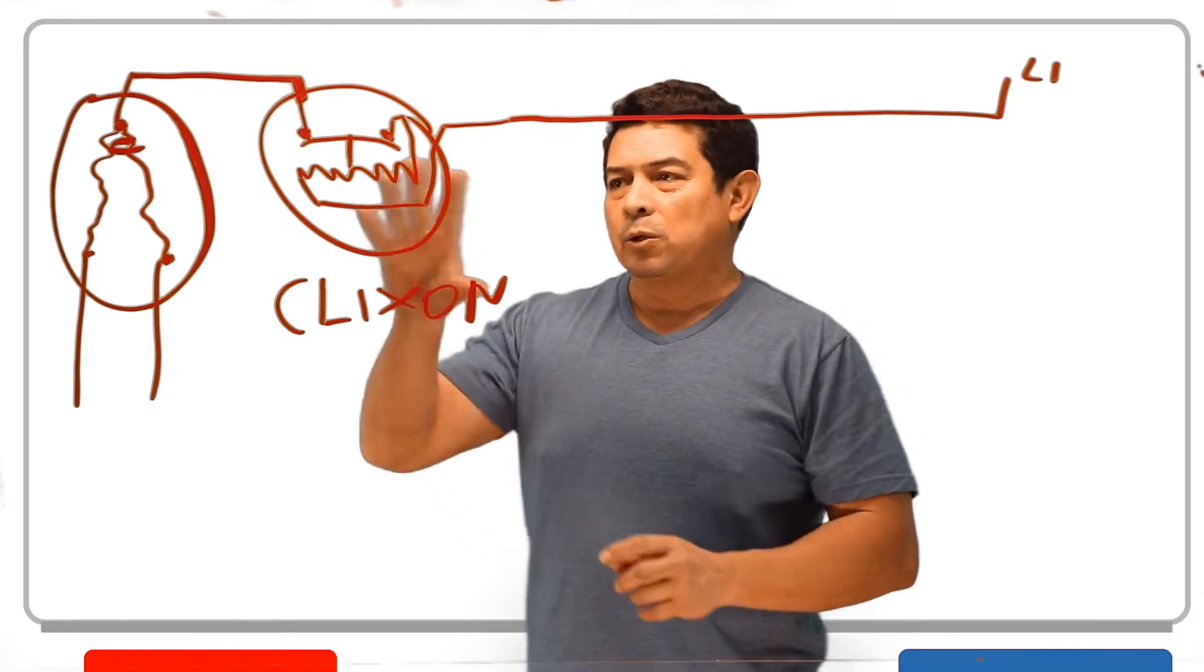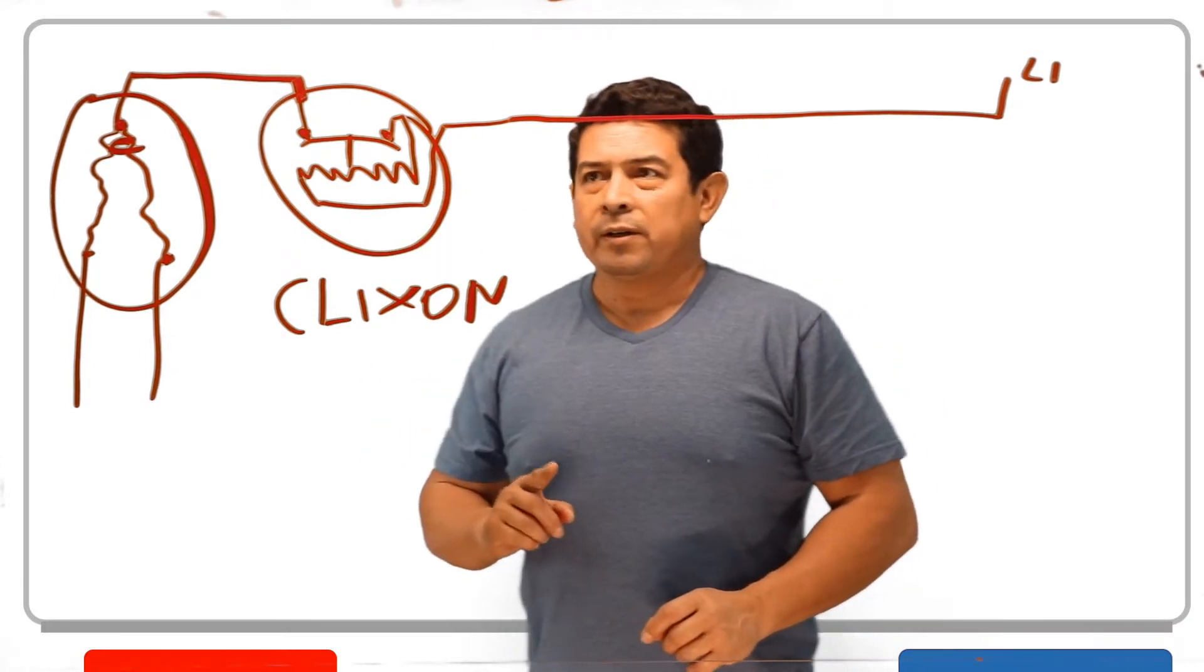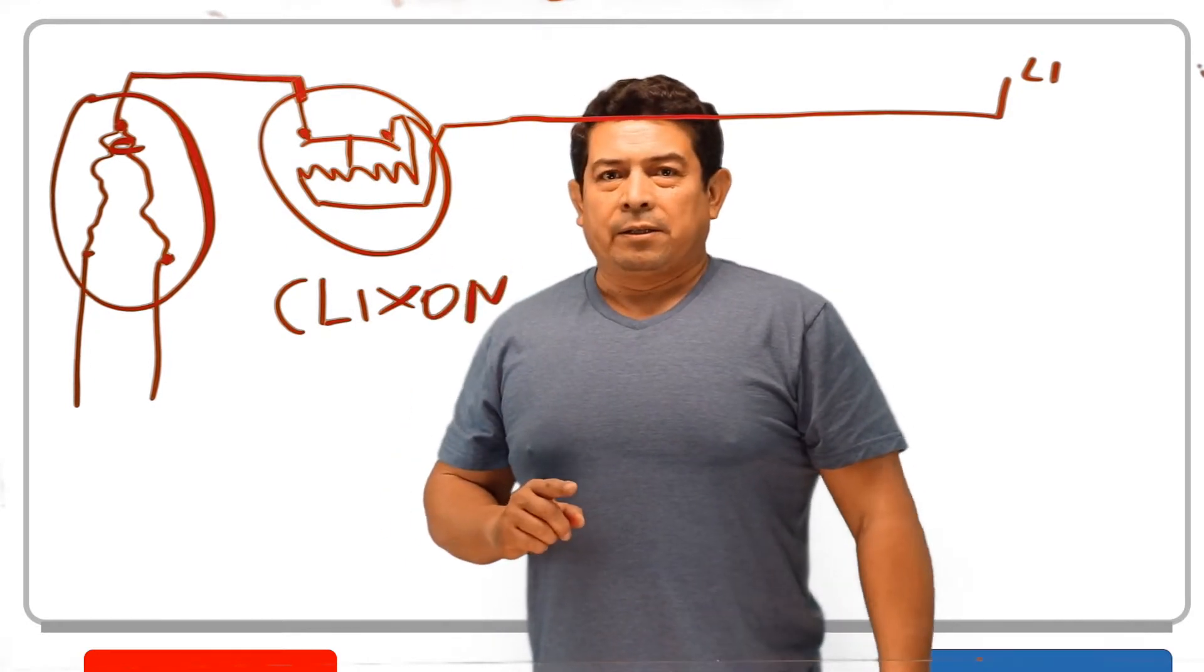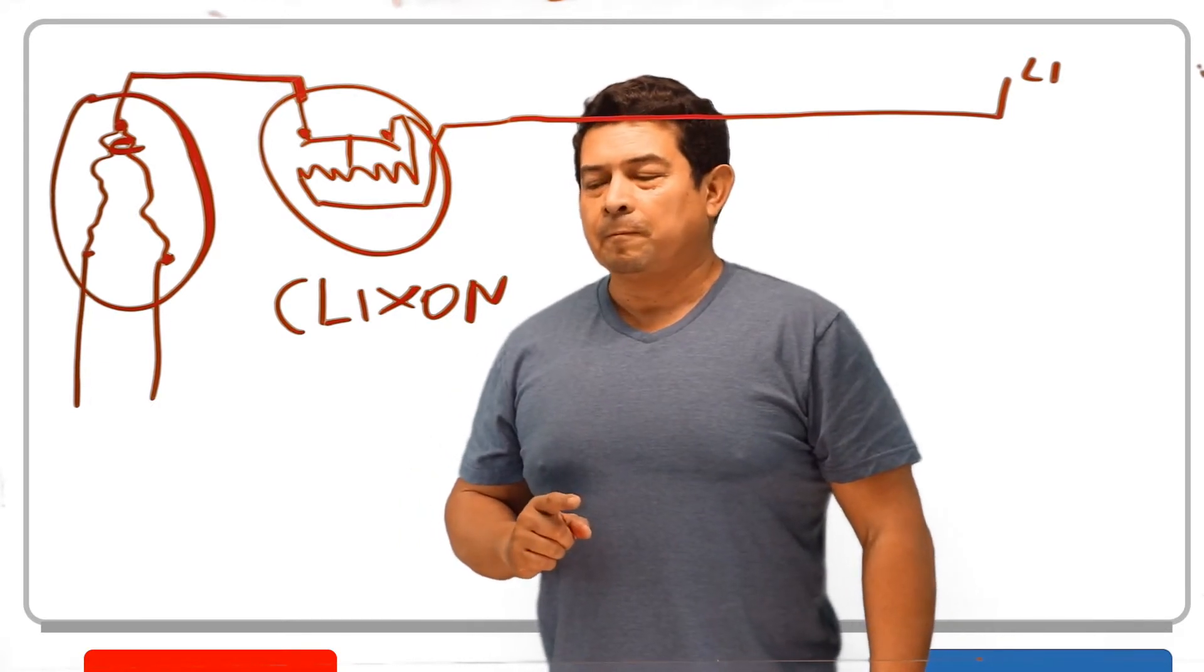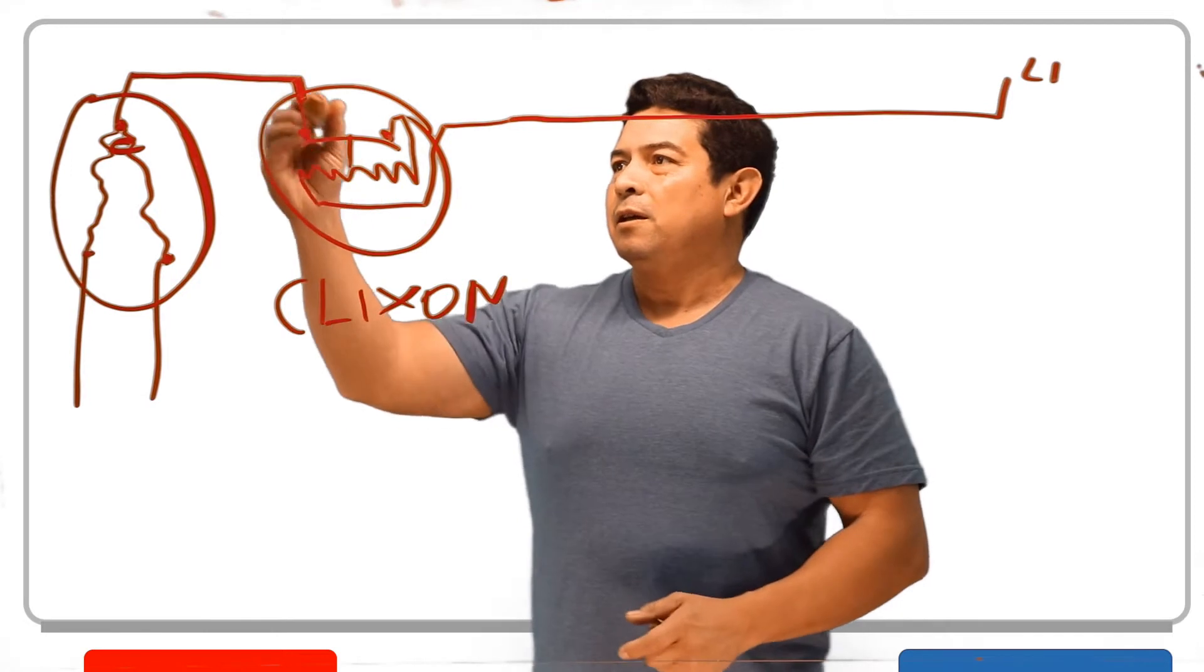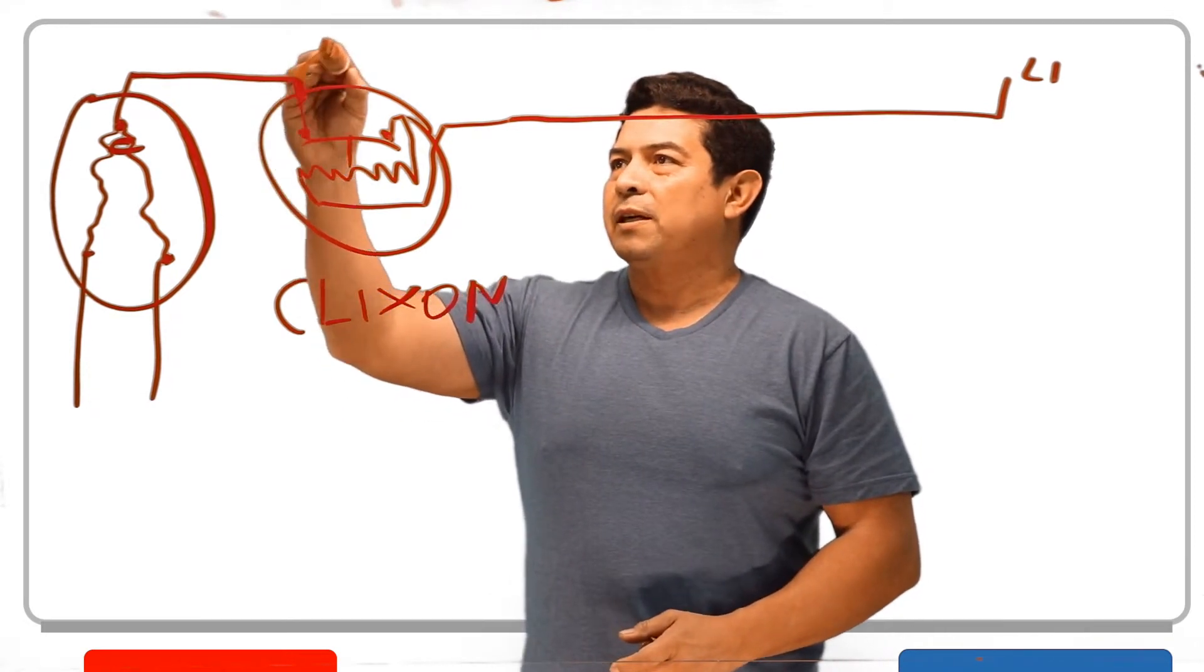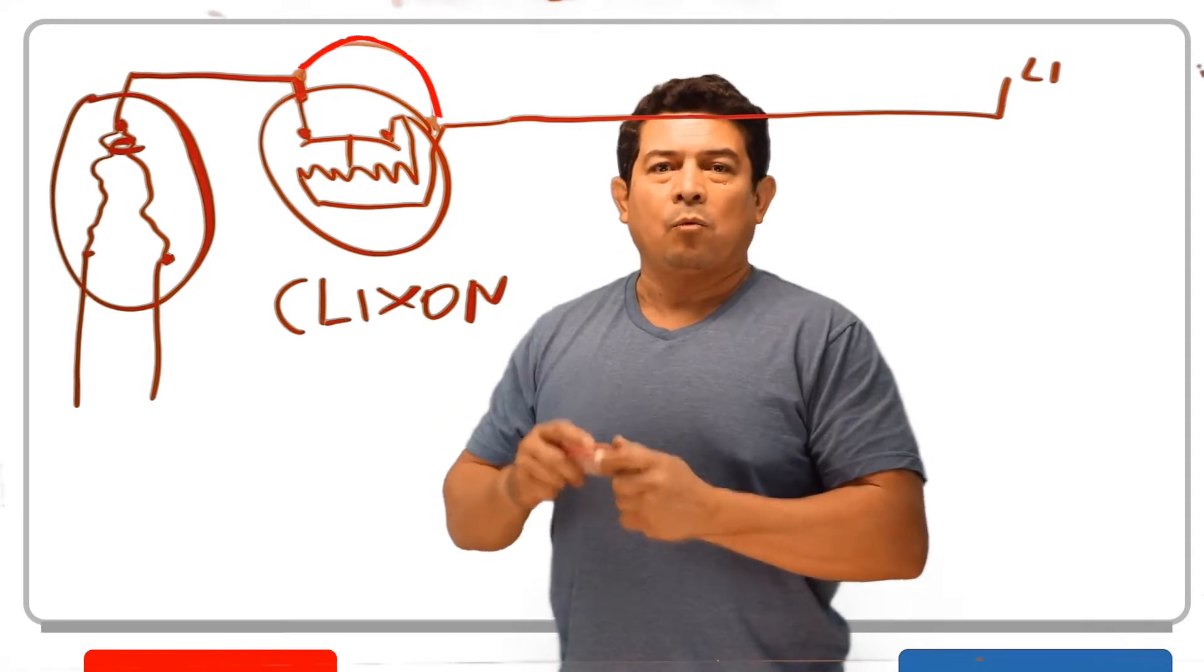So keep this in mind for your Clixxon. All it is, like I said, it's an overload. Another thing I wanted to point out is can you bypass this? Well, of course you can, but should you bypass it? Now, one thing that I have done in the past is I have taken and just hooked up a wire from this side over to this other side. Why?